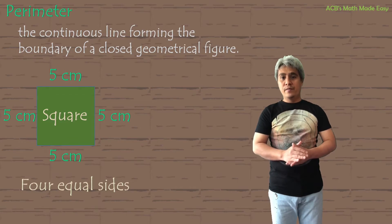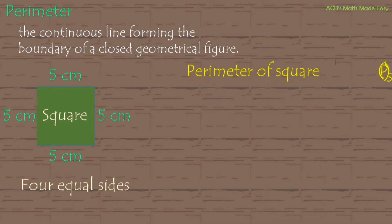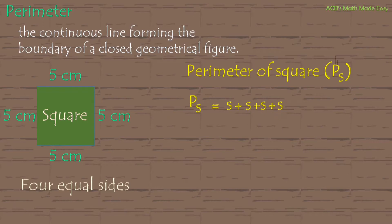We are now going to learn how to get the perimeter of a square. We will abbreviate it with PS. So our formula is PS equals S plus S plus S plus S. Perimeter of square is 5 plus 5 plus 5 plus 5. So the perimeter of square is 20 cm.